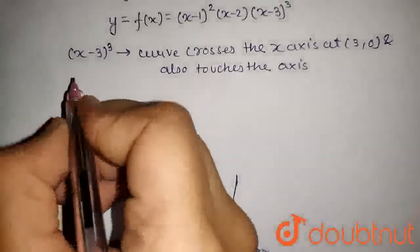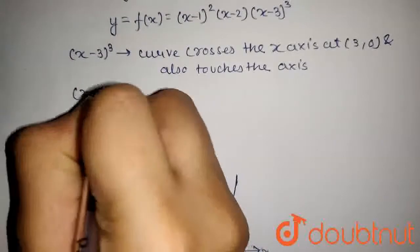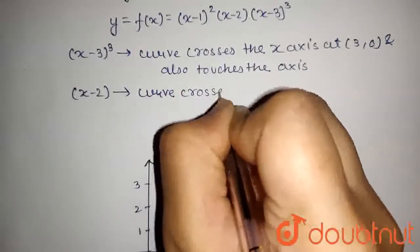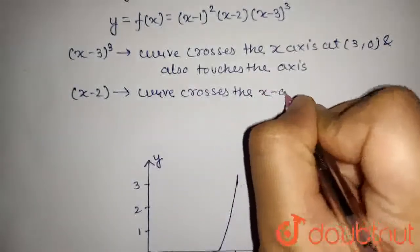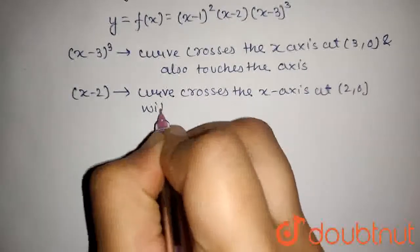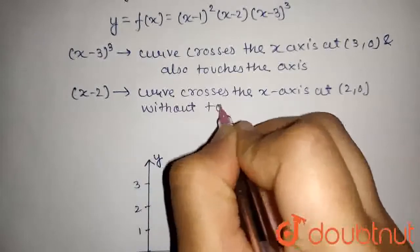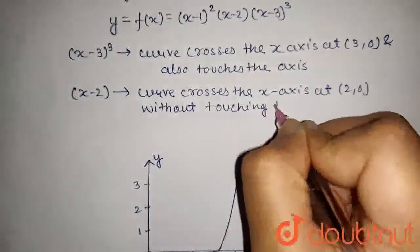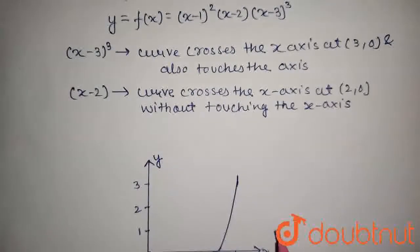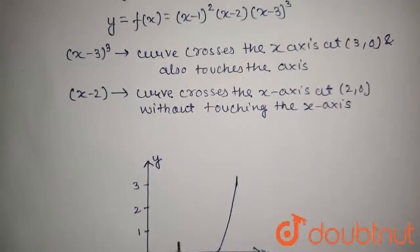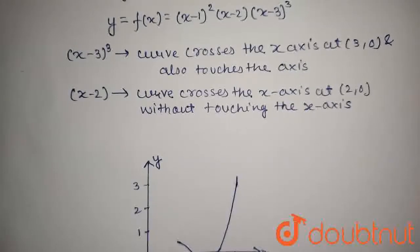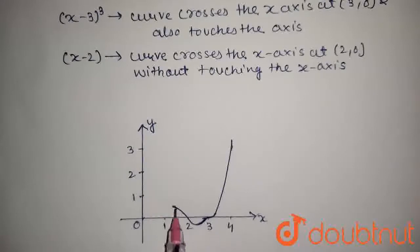Now, x minus 2 curve will cross the x-axis at 2 comma 0 without touching the x-axis. So, its graph will be like this.